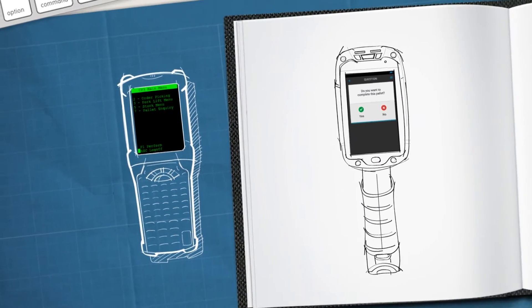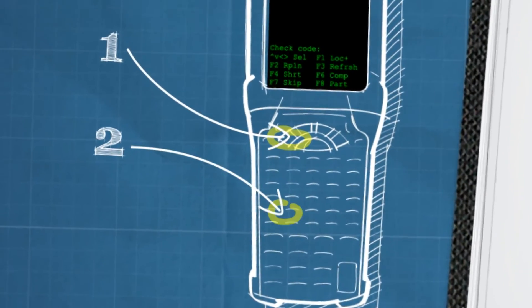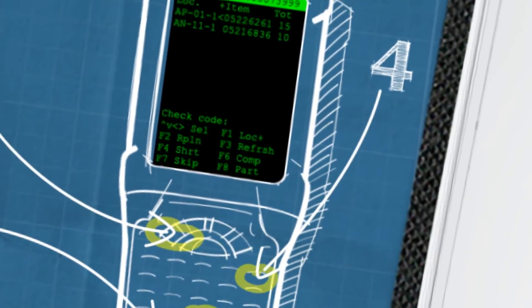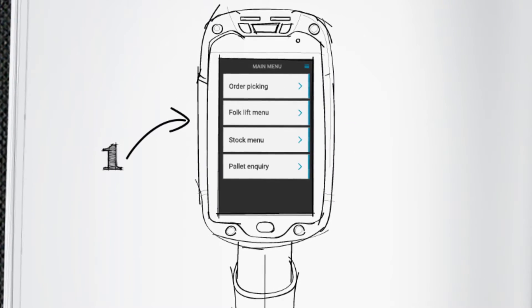Right, I'm going to compare the two. If a worker wants to pick an item, in the old version, it would have taken several clicks with their eyes moving all over the place. Now, it's just one simple tap.